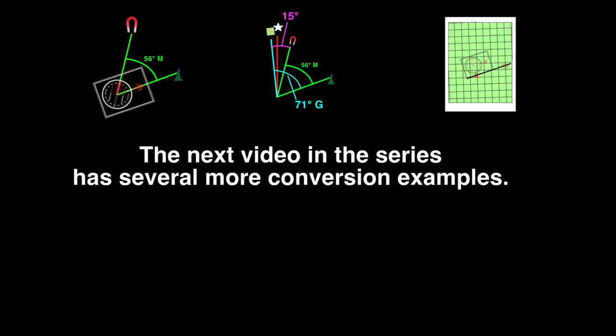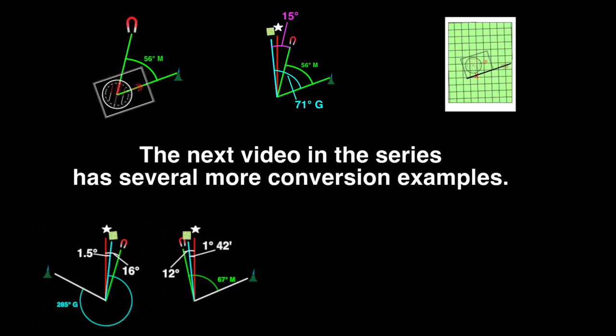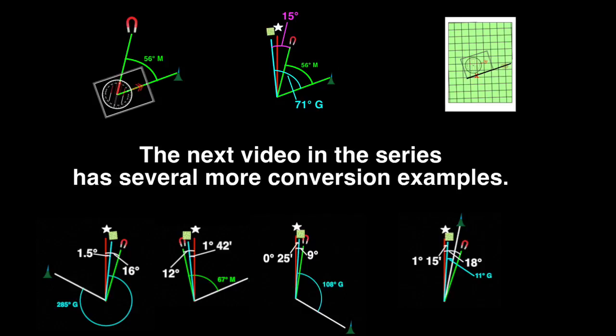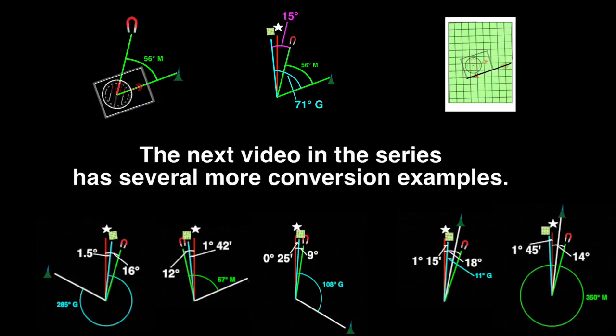In the next video in the series, there are several additional north reference conversions and their solutions. I'll lay out the problem and then put the pause symbol on the screen. If you want to solve the problem on your own, pause the video using your video player's controls, do the conversion, and then continue playing the video to see the solution. The problems will explore different combinations of grid and magnetic north being on either side of true north. They'll also get a bit trickier as we progress.